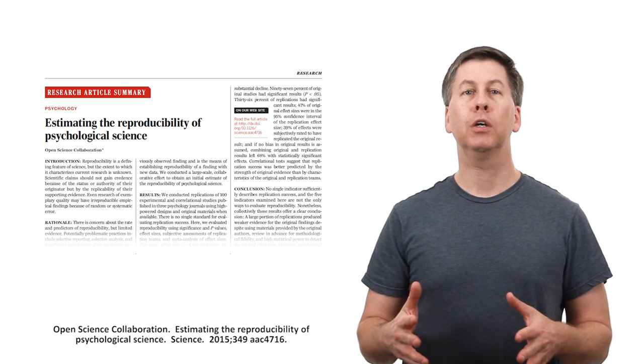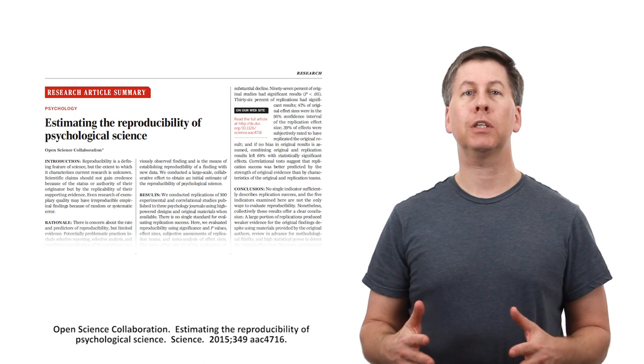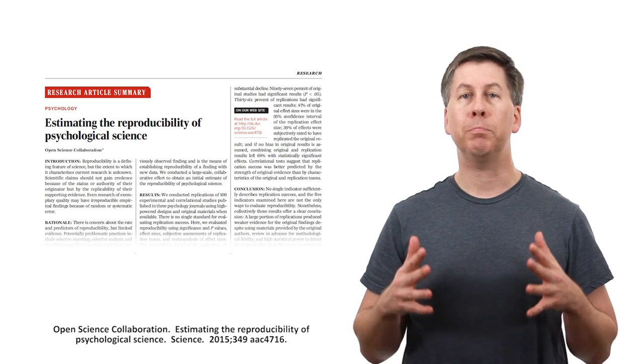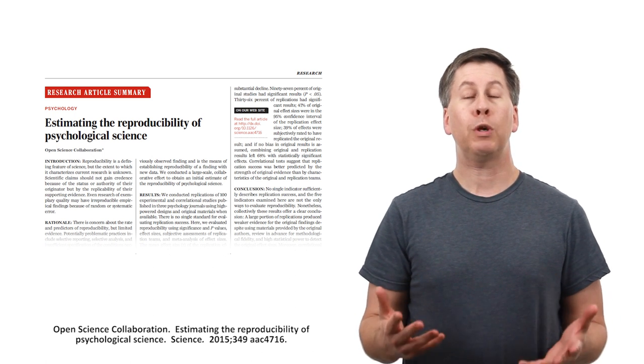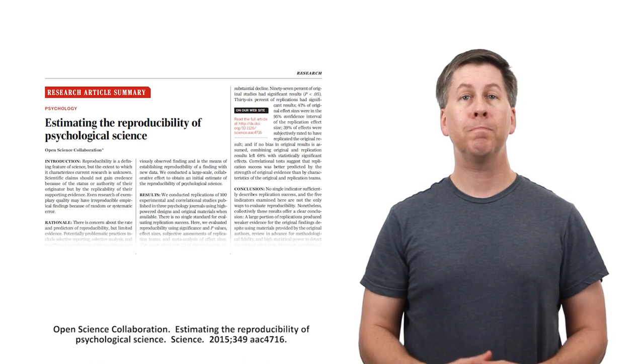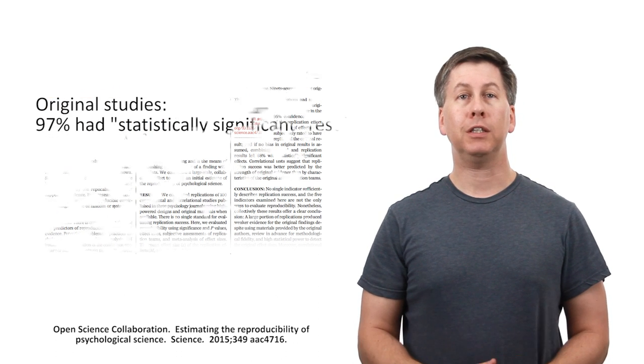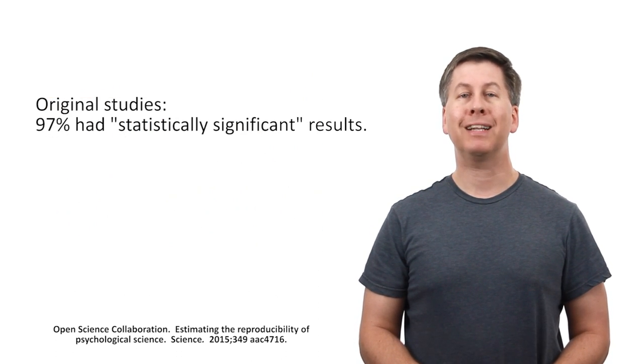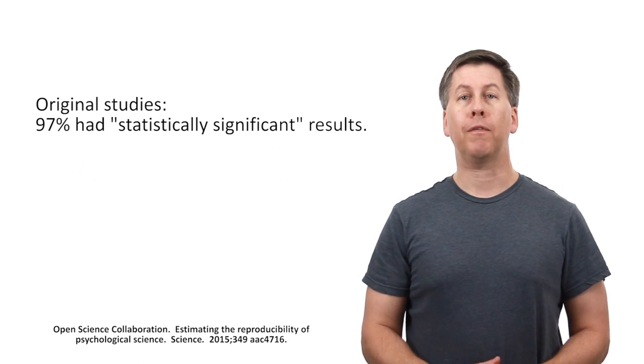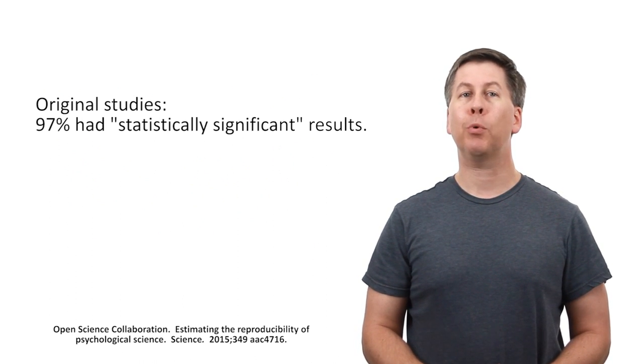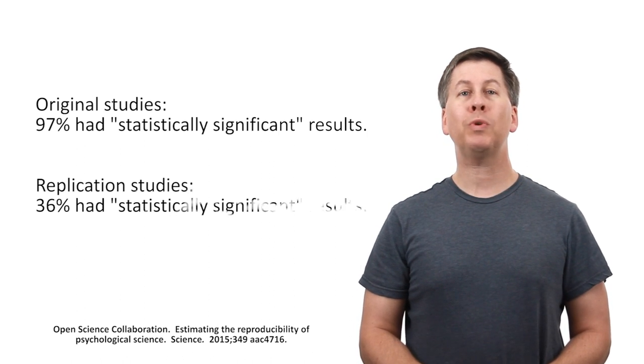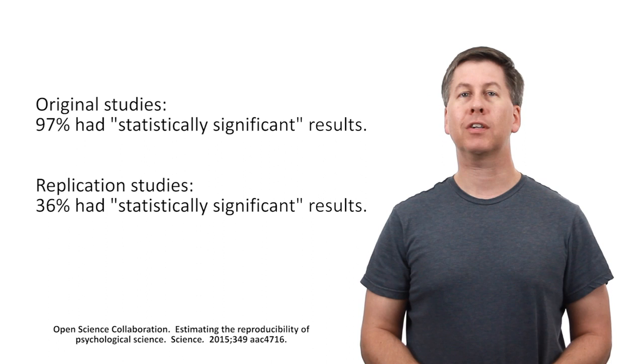Similar study subjects were exposed to the same conditions and had the same outcomes measured. What did the reproducibility project find? Among the original studies, 97% of them had statistically significant results, usually meaning a p-value less than 0.05. The replication studies, only 36% were statistically significant.